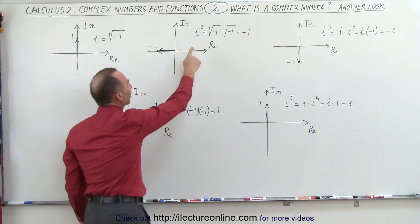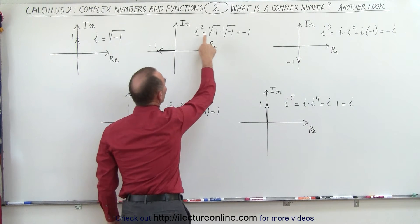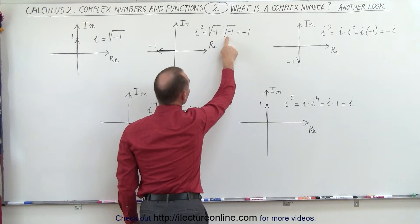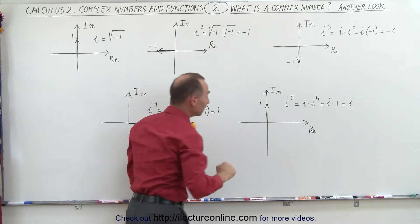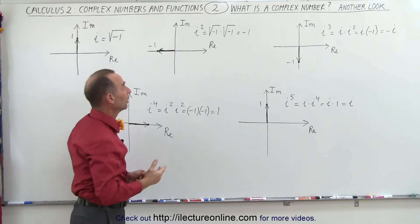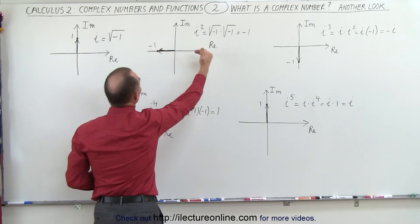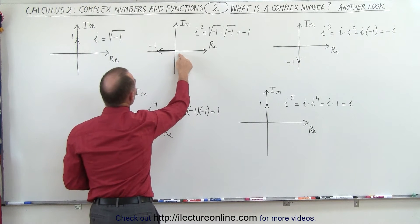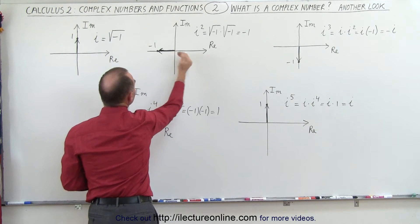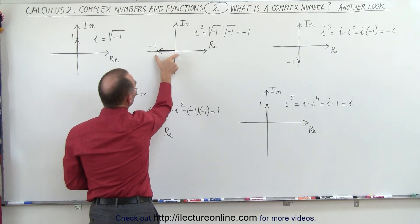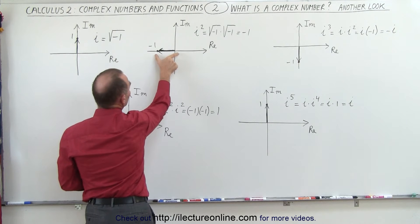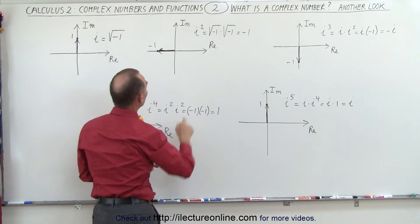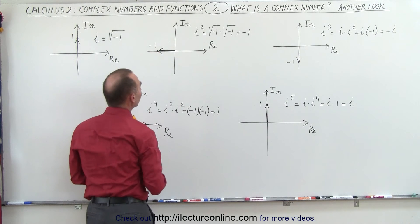But when we say i squared, that is equal to the square root of negative one times the square root of negative one, which is equal to negative one. And negative one is a real number. You can see it's pointing along the real axis, one unit in the negative direction. So this can be represented by a small unit vector pointing in the negative real direction, equal to negative one.